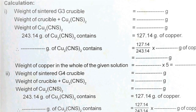Now let us discuss the calculation part. The weight of the sintered G3 crucible (empty) is equal to x grams. The weight of the crucible plus Cu2(CNS)2 is equal to y grams. Therefore, the weight of cuprous thiocyanate is equal to y minus x grams.